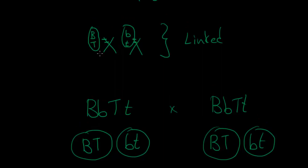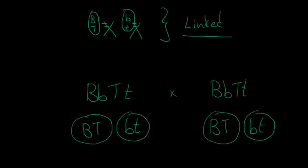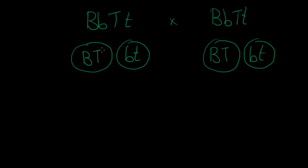This is only true if crossing over does not take place. If crossing over does occur, the alleles can recombine. However, as we explained, crossing over does not happen all the time in all pairs of chromosomes. So we consider the case where genes are linked and no crossing over occurs, meaning the only gametes formed are the two linked combinations.